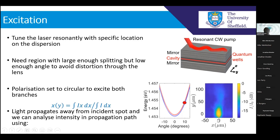We also set the polarisation to circular because this is inherently a two-band effect — we want to make sure we're exciting both bands equally. We could use diagonal polarisation, but we decided to use circular. In a real-space image of the emission, you can see this exponential decay of intensity as we propagate in the Y direction. We can analyse this propagation path using a centre-of-intensity equation: for each Y value, you take a slice, integrate over it, and divide by the total intensity of that slice to get the centre of intensity. Plotting that for each Y value should reveal the oscillations.